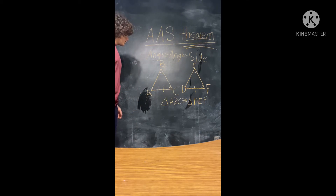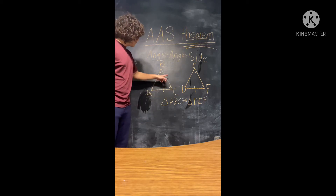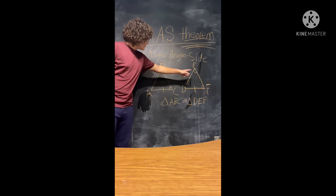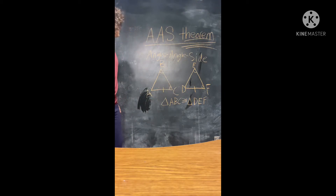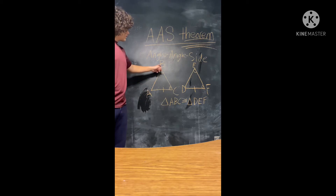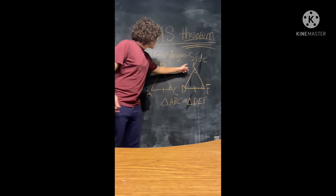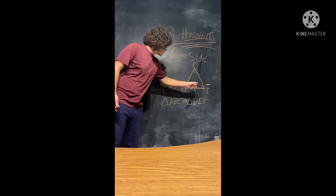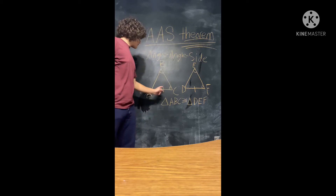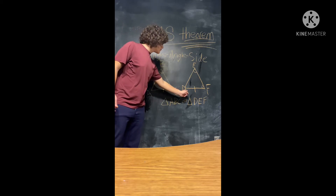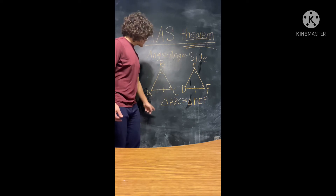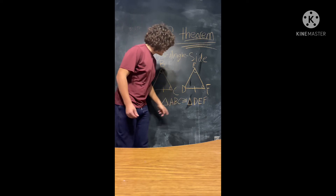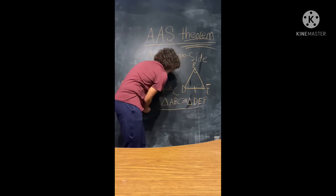What exactly is a non-included side? An included side is when it's between the two angles; a non-included side is not between the two angles. Angle B is congruent to angle E, angle C is congruent to angle F, and segment A-C is congruent to segment D-F. Using A-A-S, we can say triangle A-B-C is congruent to triangle D-E-F.